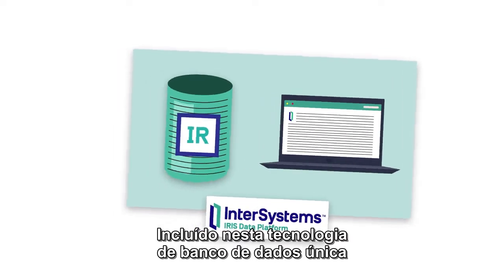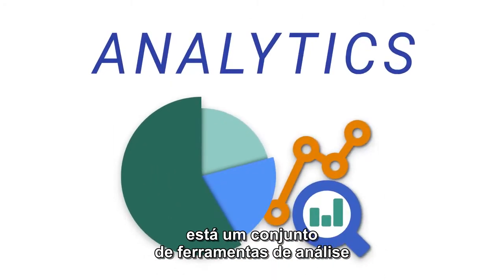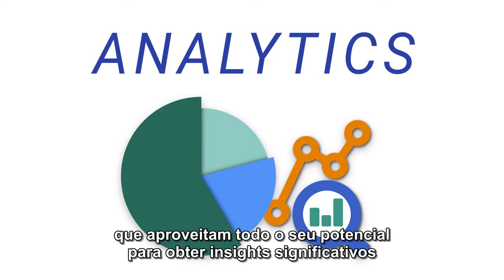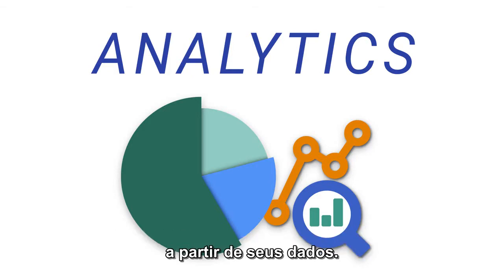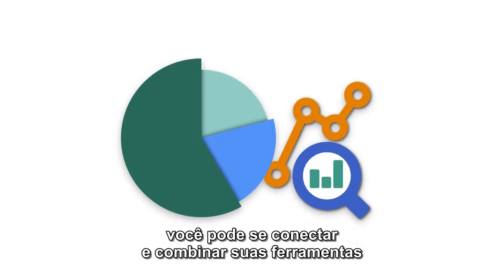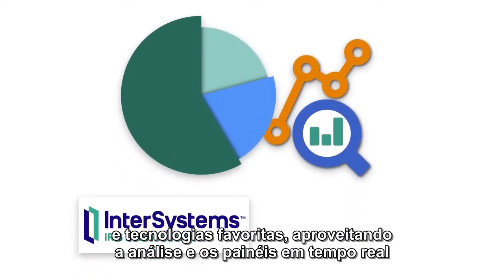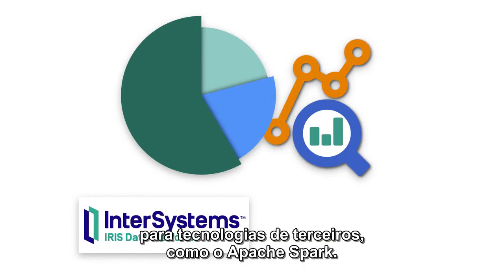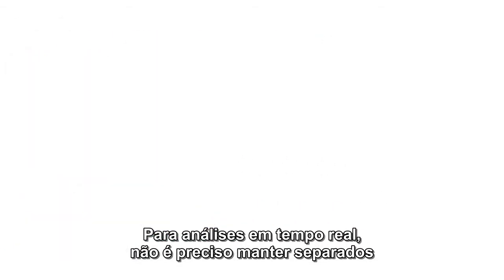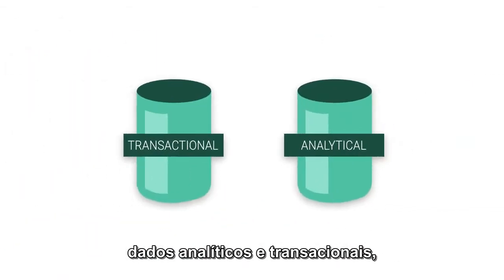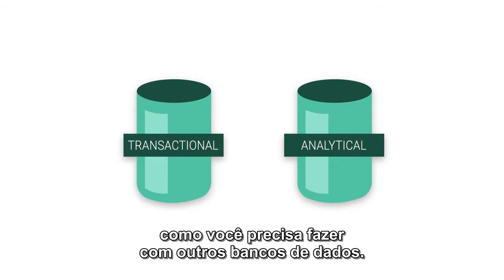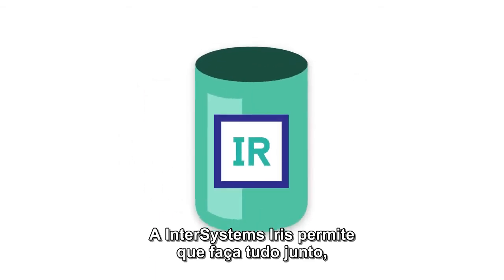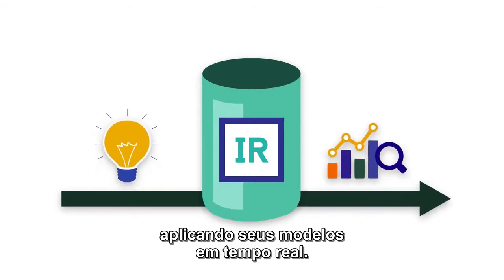Included with this best-in-class database technology is a built-in analytics suite that unlocks your potential to derive meaningful insights from your data. Acting as an open analytics platform, it enables you to connect and combine your favorite tools and technologies, leveraging both InterSystems' own real-time analytics and dashboards, as well as connectors to popular third-party technologies such as Apache Spark. For real-time analytics, there's no need to maintain transactional and analytical data separately, as you need to with other databases. InterSystems IRIS allows you to do it all together, applying your models in real-time.